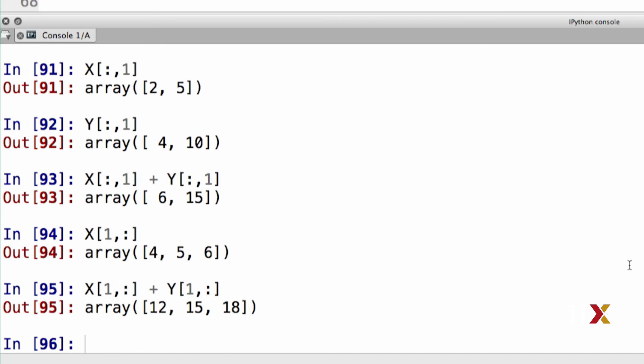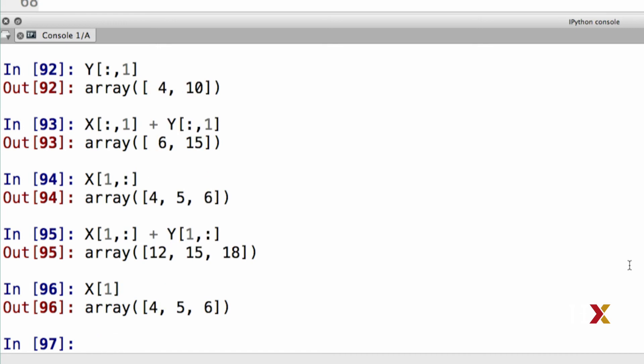Because two-dimensional arrays are defined as nested rows, I can use a shorthand notation to access the first row of x, which in this case would be just x square brackets 1. And this gives me the same exact output as typing x square bracket 1 comma colon.